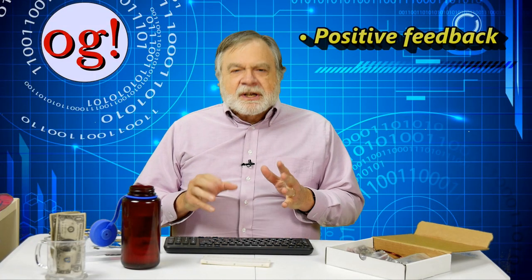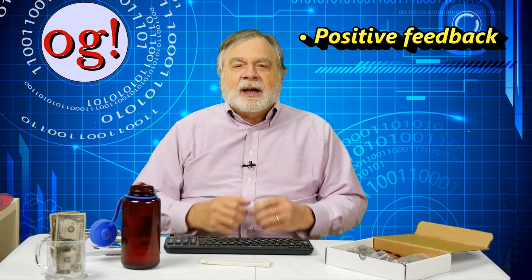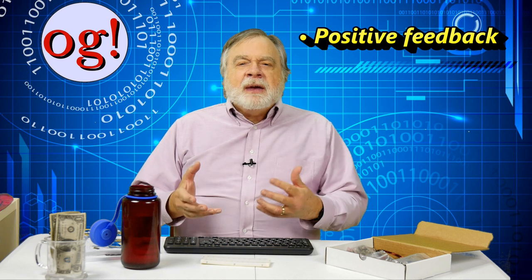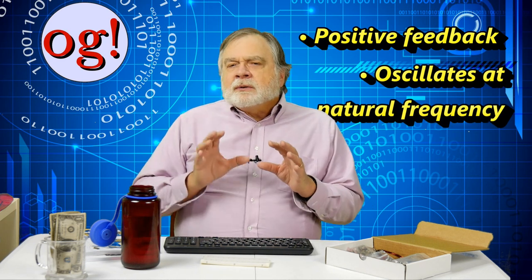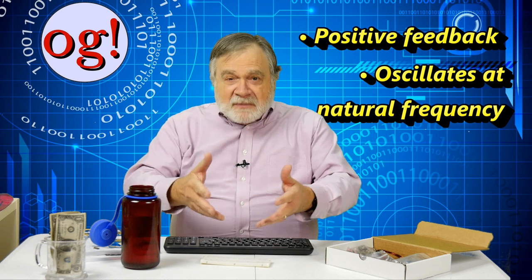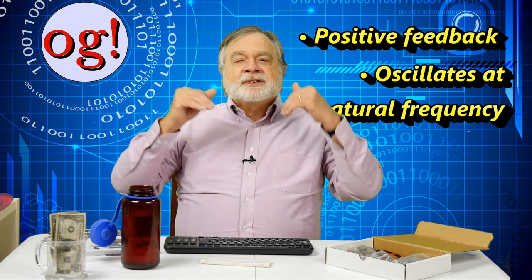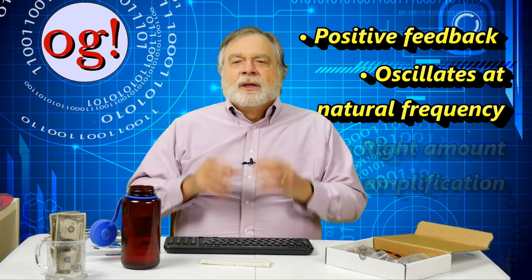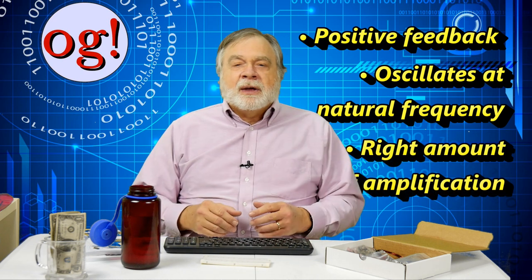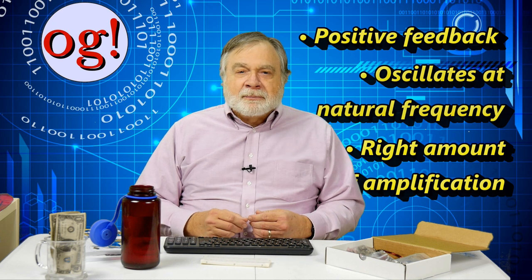So, what did we learn from this experiment? First, an analog oscillator requires some sort of positive feedback. That means feedback that's in phase with the input. Second, the frequency determining element, in this case the phase shift network, coupled with the op amp has a natural frequency at which it likes to be resonant. Third, too much or too little feedback will keep the oscillator from working properly.